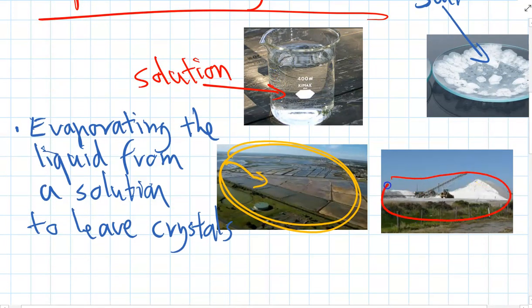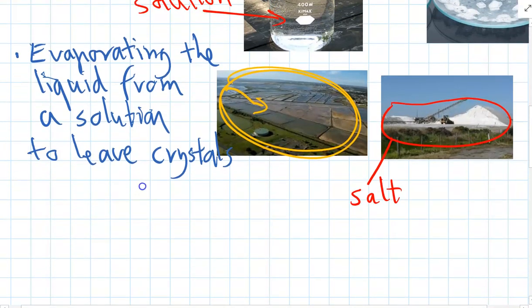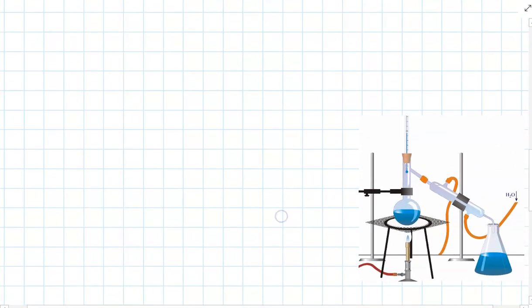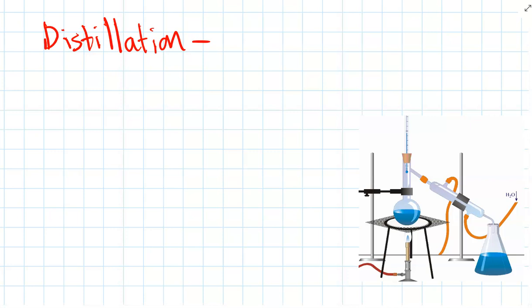And over time, they ended up farming piles and piles of salt, which then they can send off to be processed and it gets sold as table salt they're using in your food. Okay. The next method, this method is also useful for separating solutions and it's called distillation. So distillation is one of the most complicated ones, but it uses three main parts to separate the mixture.